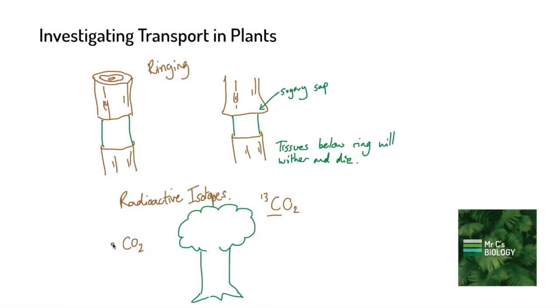So if this tree is surrounded by a carbon dioxide rich atmosphere that is actually radioactive carbon, then it will continue to take in the carbon dioxide and photosynthesize and use this carbon dioxide to make glucose. But then because it's used radioactive carbon, this glucose will be radioactive too.